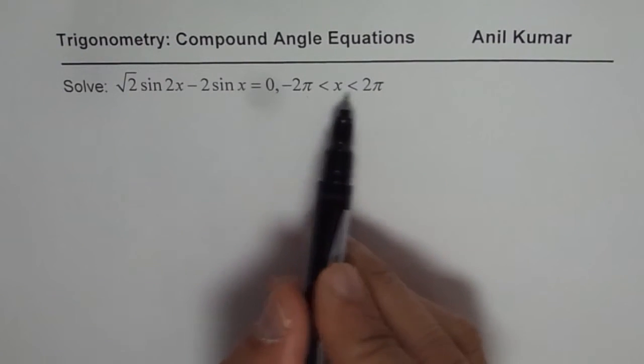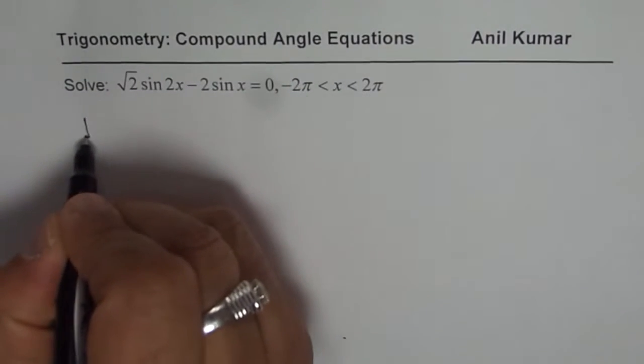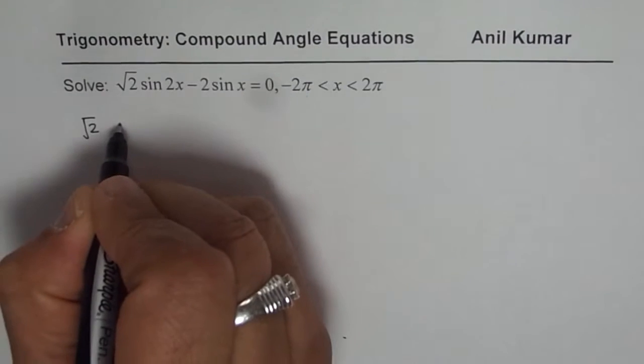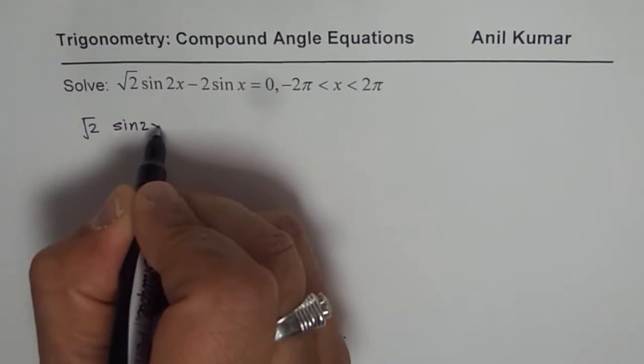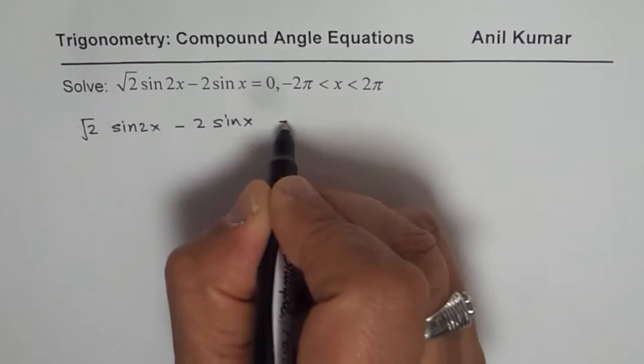So take care of the domain also. You can pause the video, try the question and then look into my solution. The question here is √2 sin 2x - 2 sin x = 0.